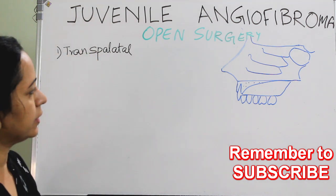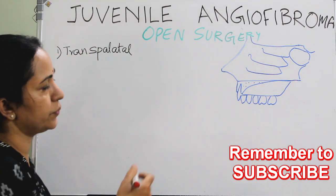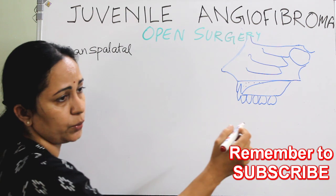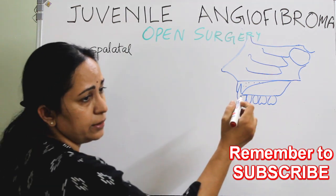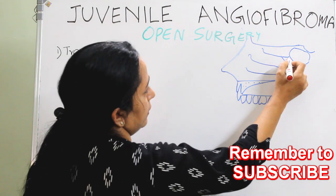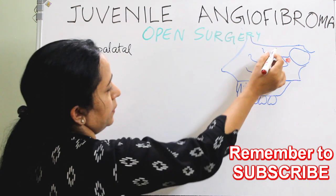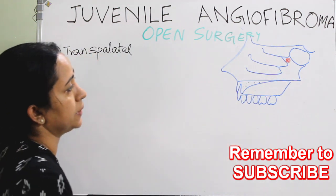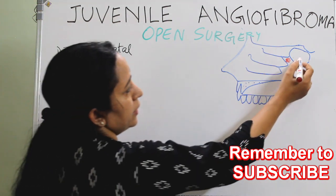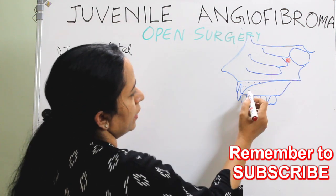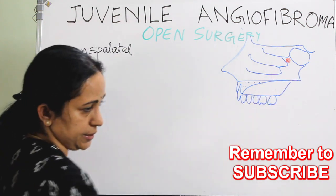JNA originates in the sphenopalatine foramen, which is located at the posterior end of the middle turbinate — inferior, middle, and posterior lateral wall of the nose, inferior middle and superior turbinate. Here also comes the sphenoid sinus and the palate.